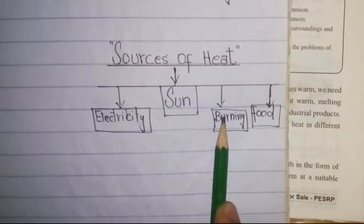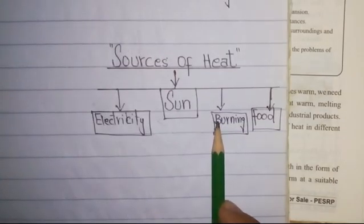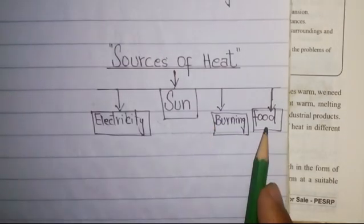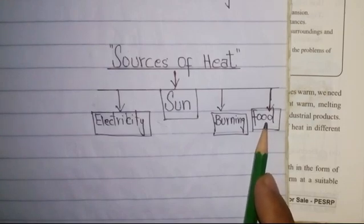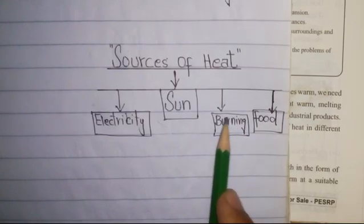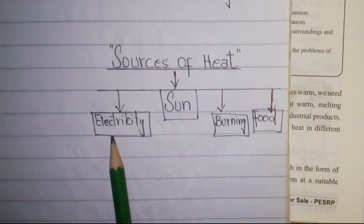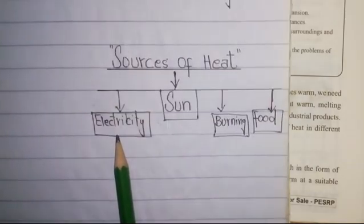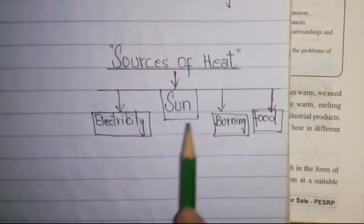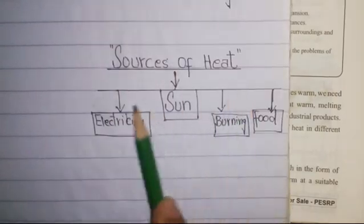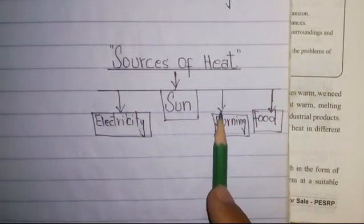Burning is a process by which heat is produced. Food is also a source of heat production. We also produce heat by electricity. All these sources we are going to discuss from our book.